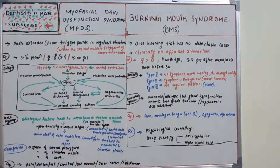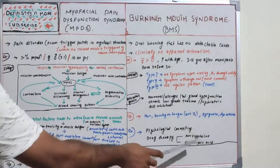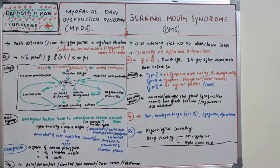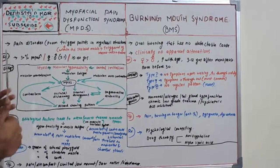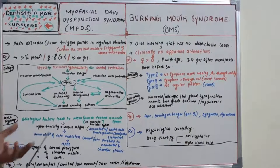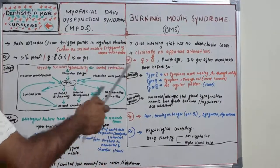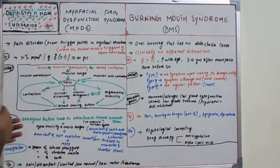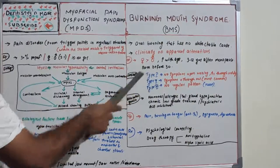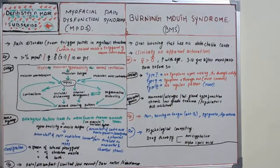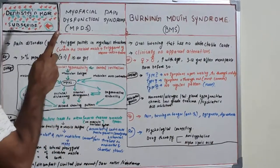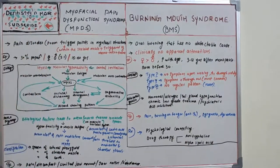Treatment for BMS: milder cases can be managed with psychological counseling. Moderate to severe cases should receive drug therapy such as amitriptyline and alpha-lipoic acid. In summary, BMS is characterized by burning without any specific cause or clinical manifestation, most commonly in post-menopausal women, with three classification types and numerous etiological factors.